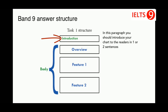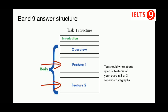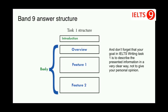Your first paragraph is an introduction. In this paragraph, you should introduce your chart to the readers in one or two sentences. Then you should write an overview paragraph describing some general trends and features. Next, write about specific features in two or three separate paragraphs. Your goal in IELTS writing task 1 is to describe the presented information clearly, not to give your personal opinion, so don't write a conclusion in task 1.